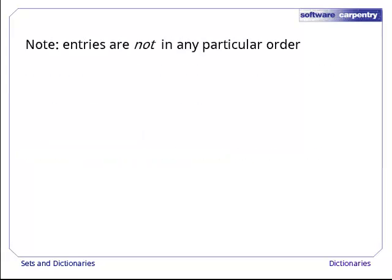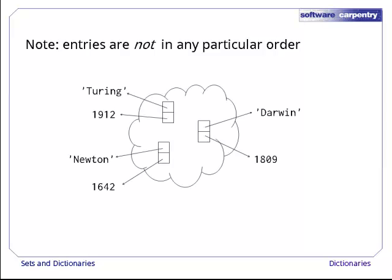Keep in mind that just like the elements in a set, the keys in a dictionary are not stored in any particular order. That's why we draw dictionaries like this, a cloud of pairs, each of which has a key and a value.